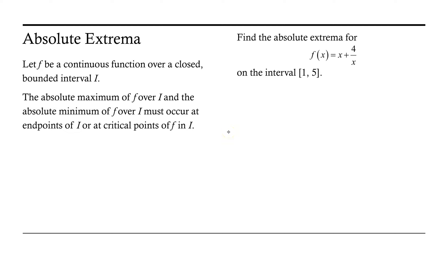Welcome. Let's take a look at an example of identifying the absolute extrema for a function. Recall that to determine the absolute extrema, if f is a continuous function over a closed bounded interval i, the absolute maximum of f over i and the absolute minimum of f over i must occur at the endpoints of i or at critical points.